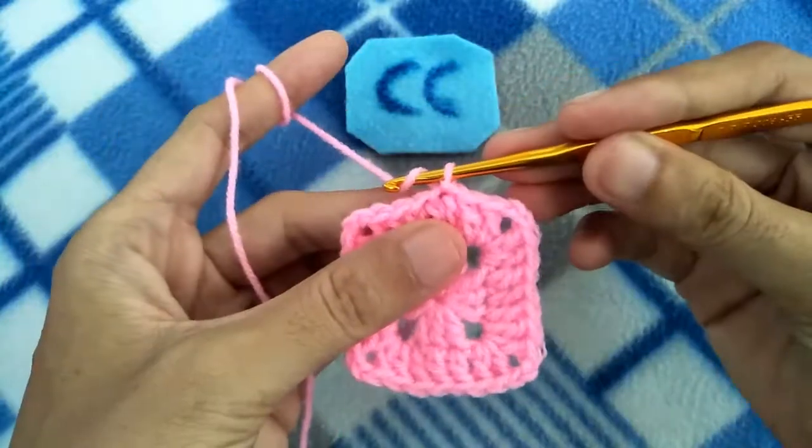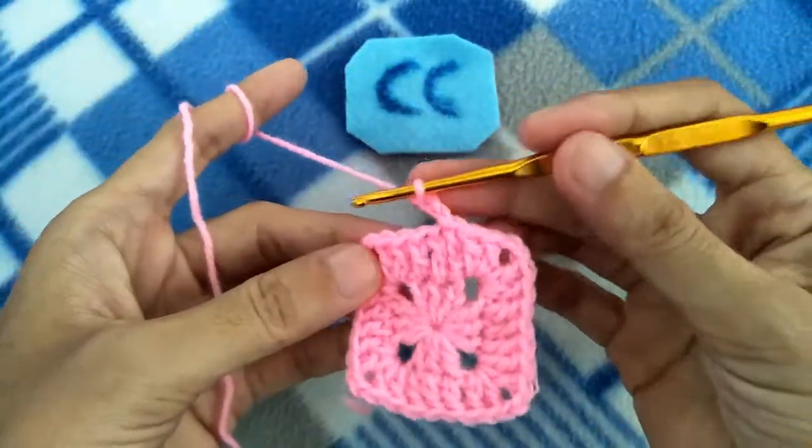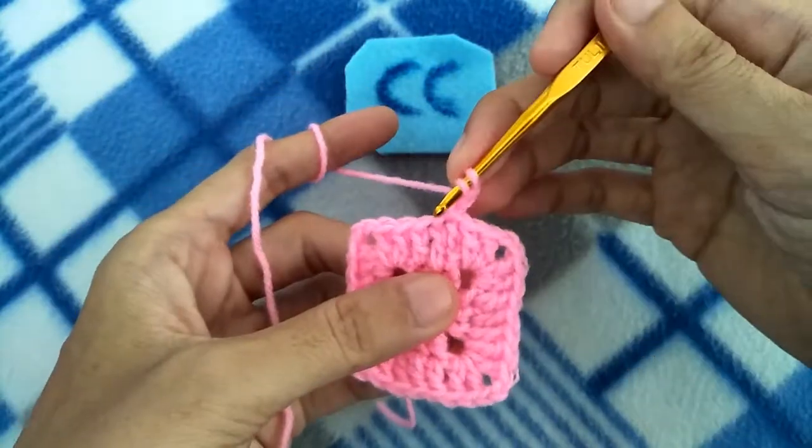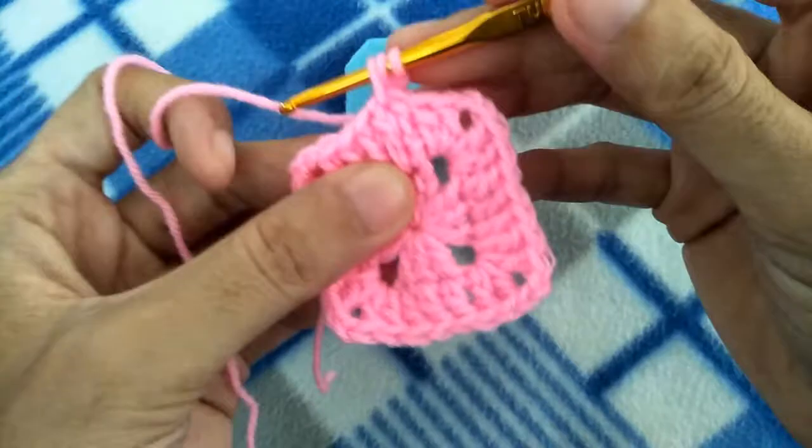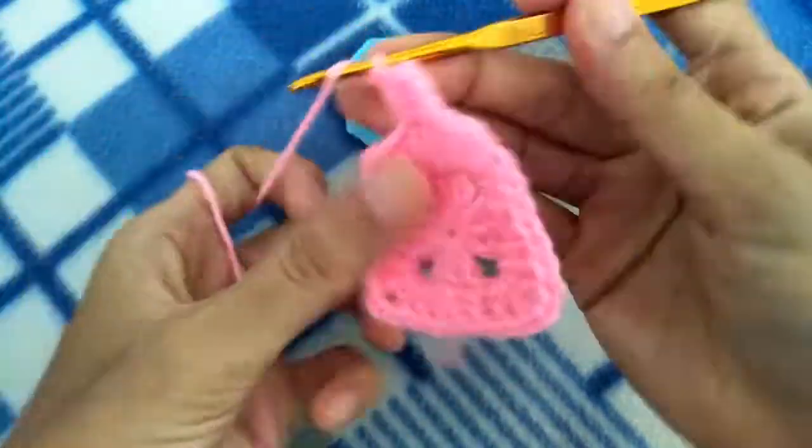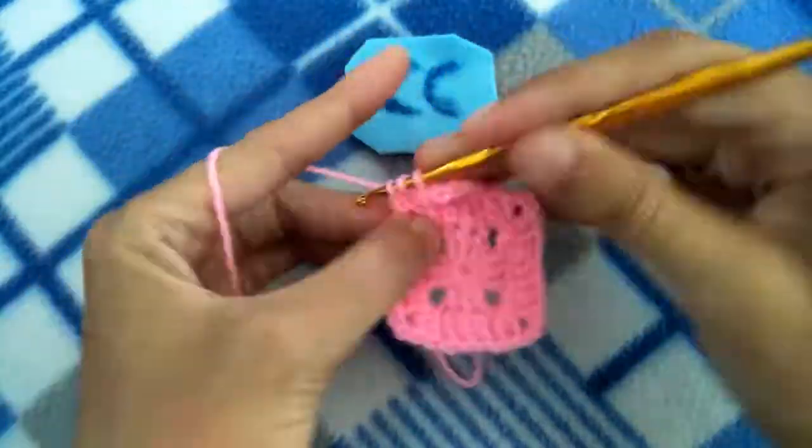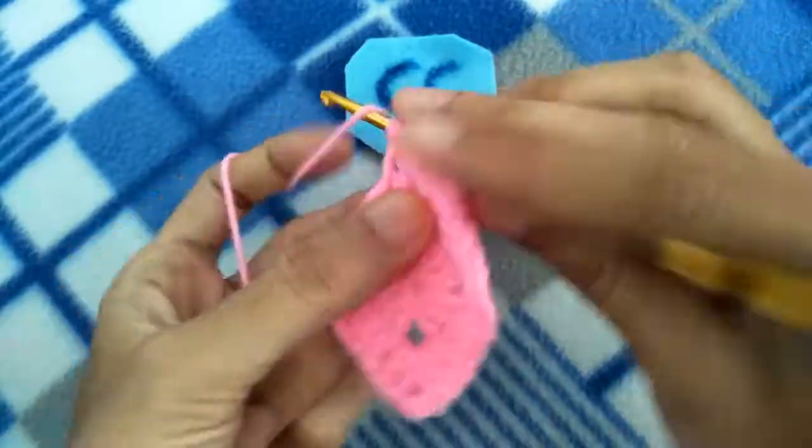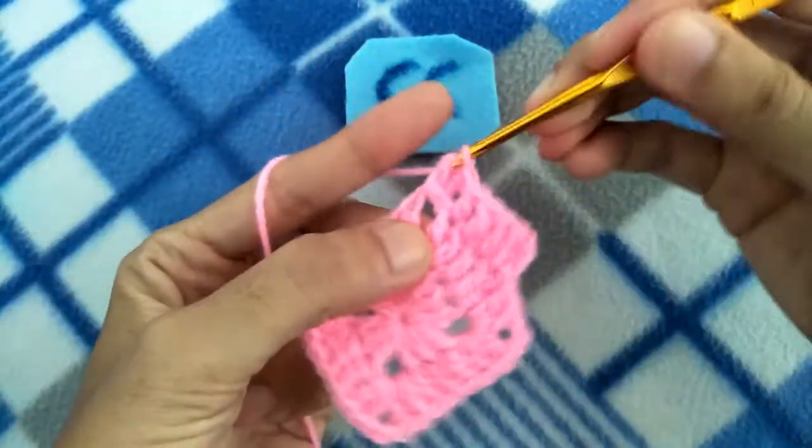Make rows 3, 4, and 5 by repeating the steps of row number 2. You need to remember the corners have to do the same steps.